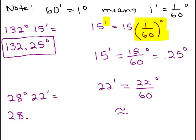And I did say to round to the nearest thousandth. So we're going to go three places after the decimal point. So to the nearest thousandth, that will be 0.367 degrees. So 22 minutes is approximately 0.367 degrees.